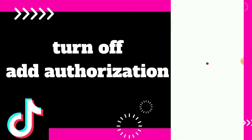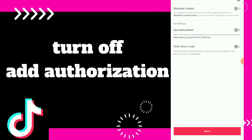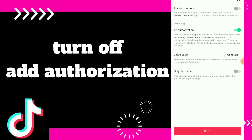Here you have ad authorization settings. Turn off this option. If you turn it on, this video will be promoted, and the video privacy status will change from private or friends to available for ads, so that the ad authorization team can review this video.